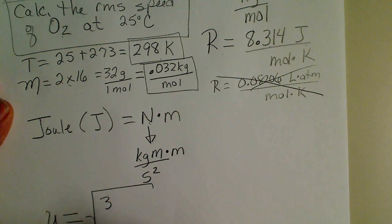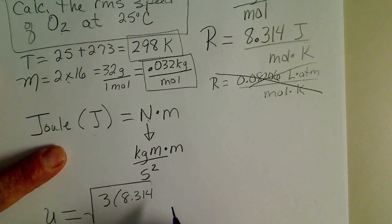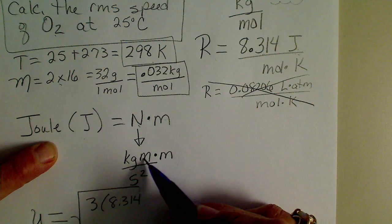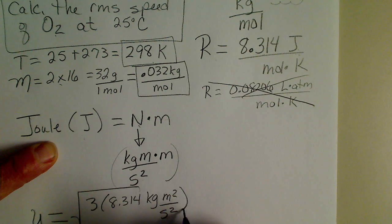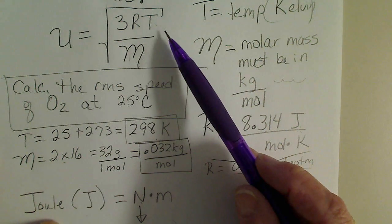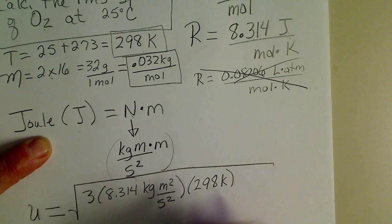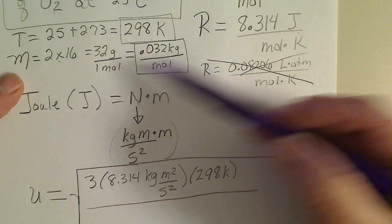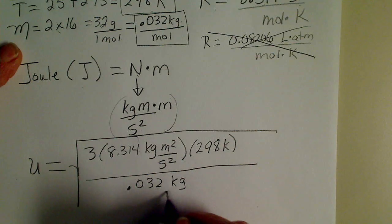This is 3, and then our R value, we're going to multiply by 8.314, and I'm going to put, instead of a joule, I'm going to show all of these units, so that is a kilogram meter squared per second squared. So that's my R, and the T that is in the formula is our temperature in Kelvin. So if we multiply by 298 Kelvin, and then we're going to divide by the molar mass, 0.032 kilograms per mole.